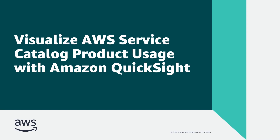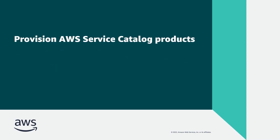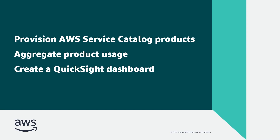In this video, you'll see how you can visualize AWS Service Catalog product usage with Amazon QuickSight. With this solution, you can provision AWS Service Catalog products in each spoke account within an AWS organization, aggregate product usage, and then create a QuickSight dashboard to view the usage data.